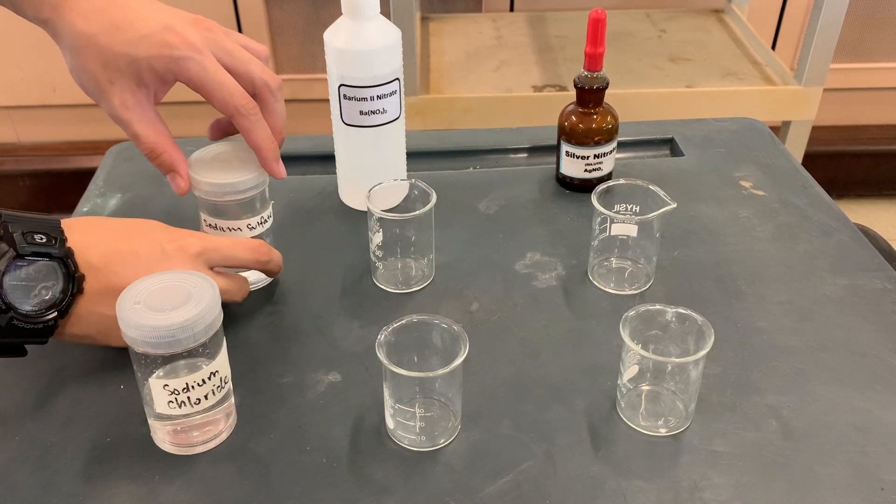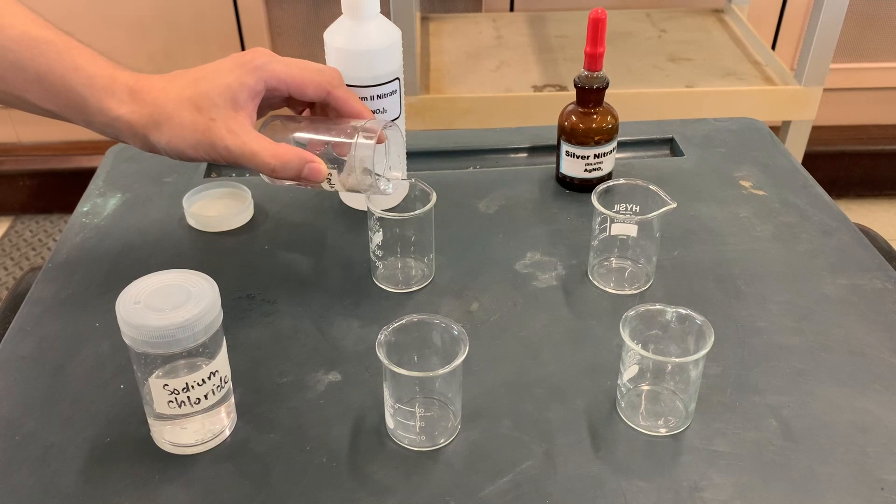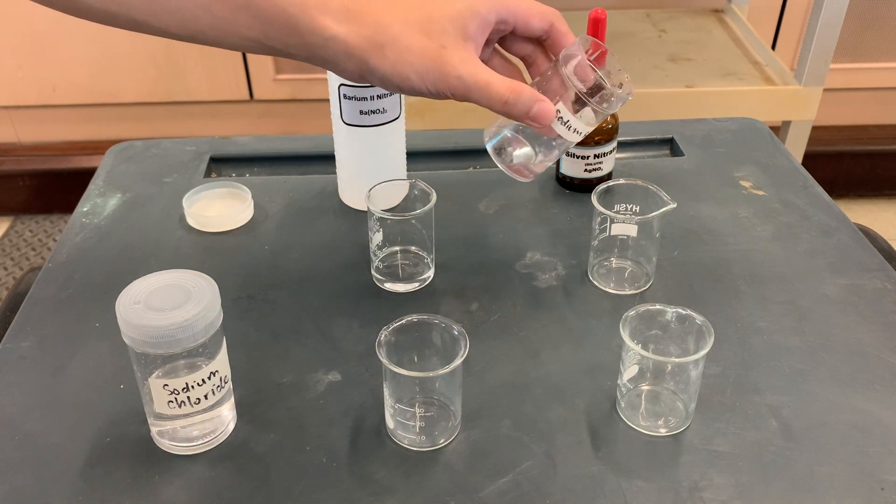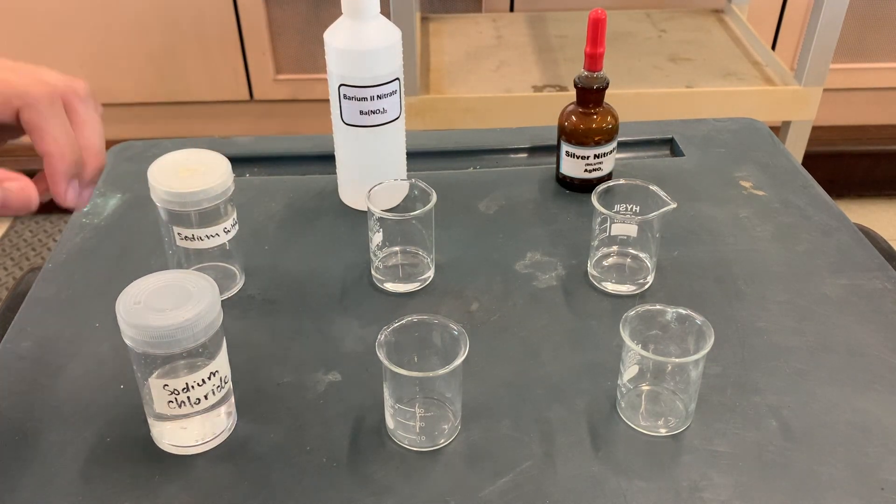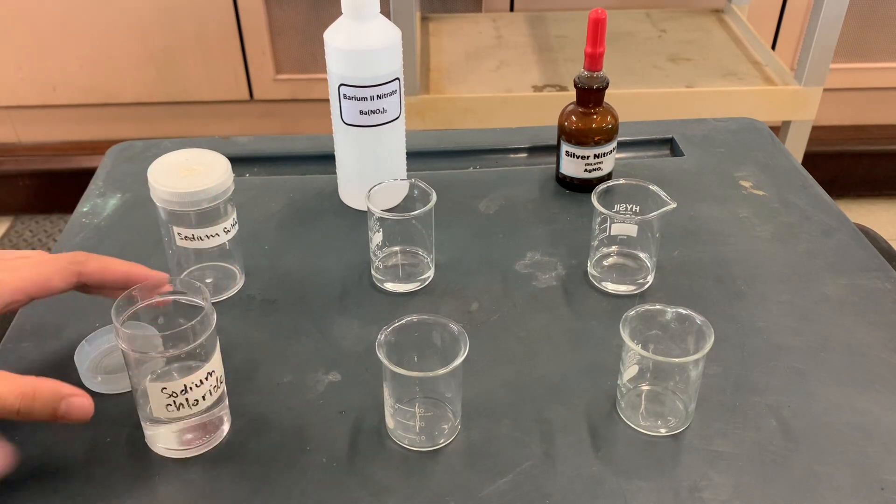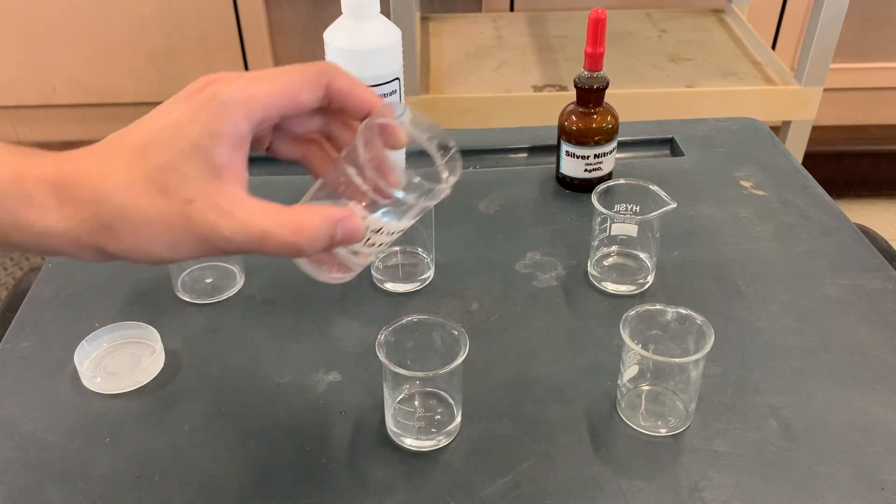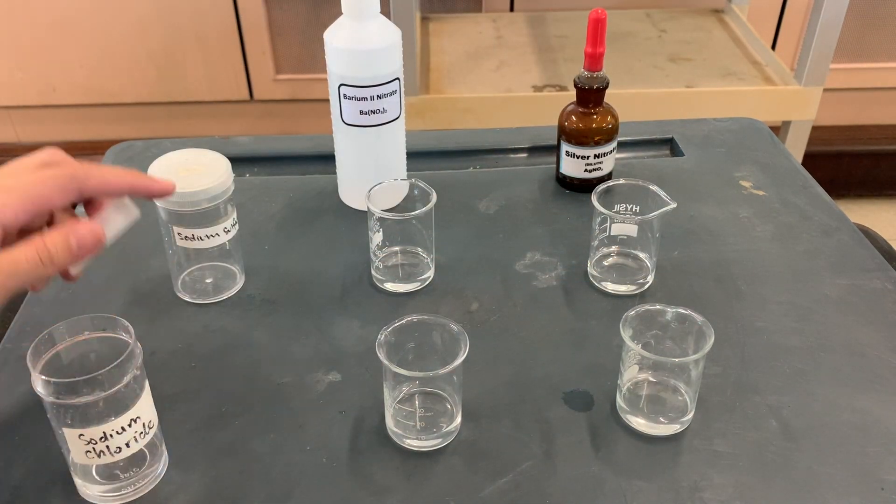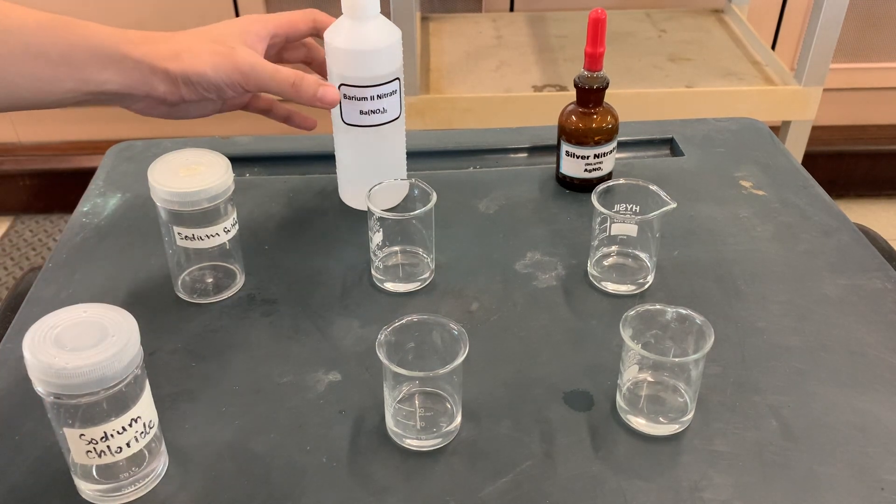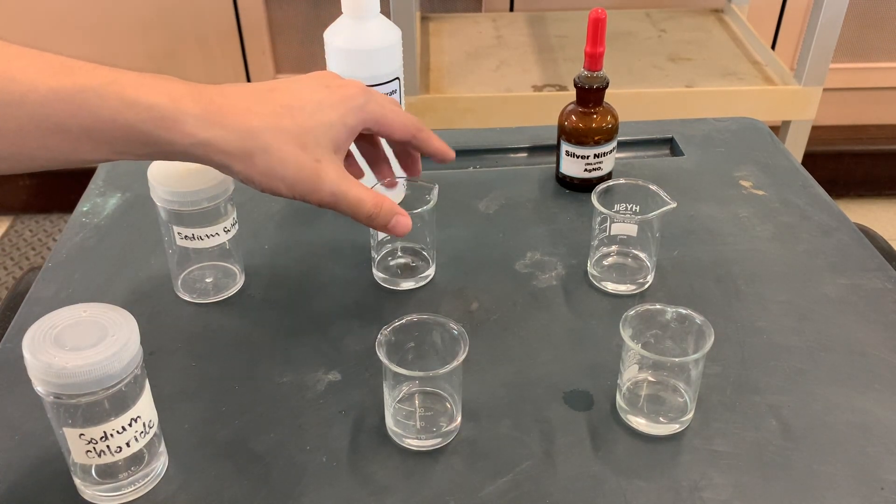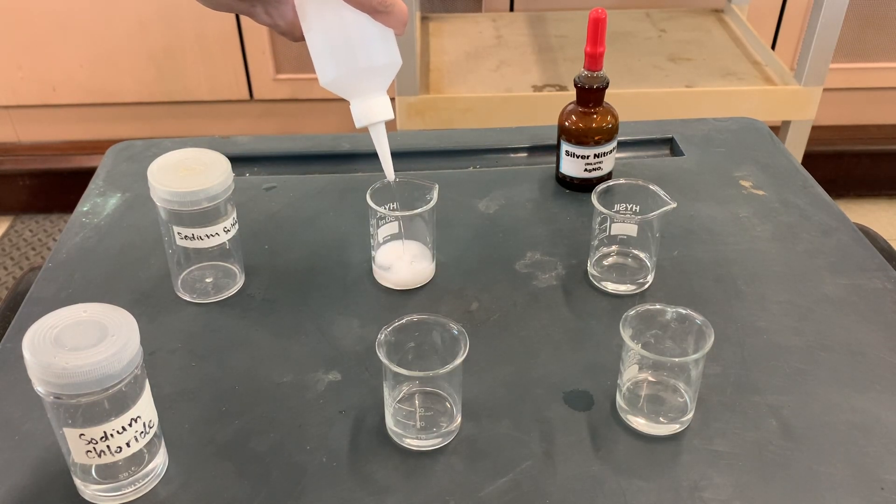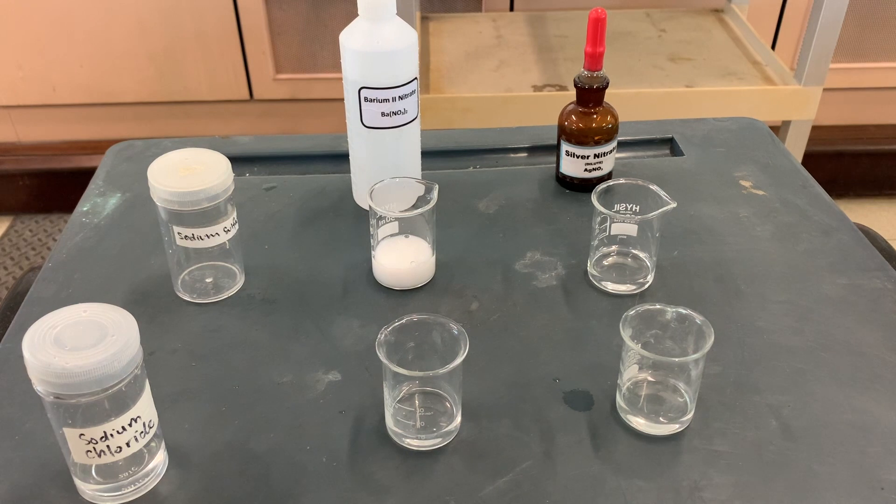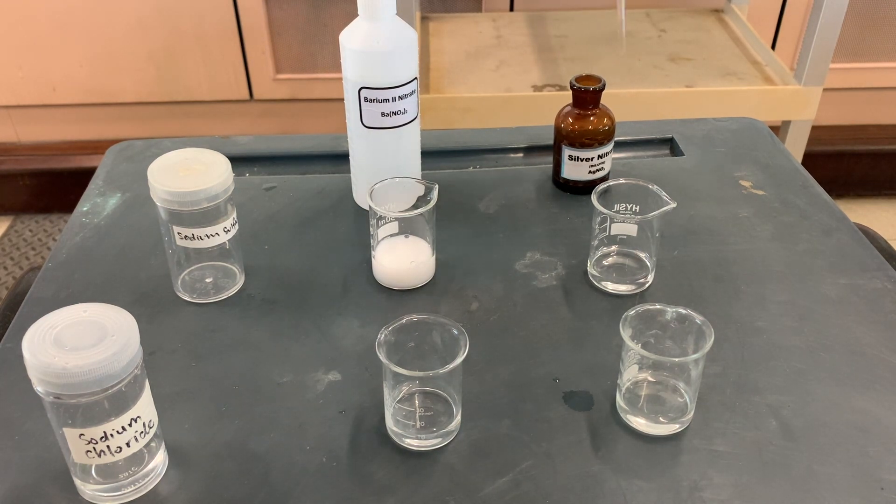Okay, over here we are going to carry out the demonstration. Let me start by pouring some sodium sulfate into this beaker and also some over there. I'm also going to add some sodium chloride into the beakers at the bottom. What do you think will happen if I were to add barium nitrate into the first beaker? A white precipitate is seen.